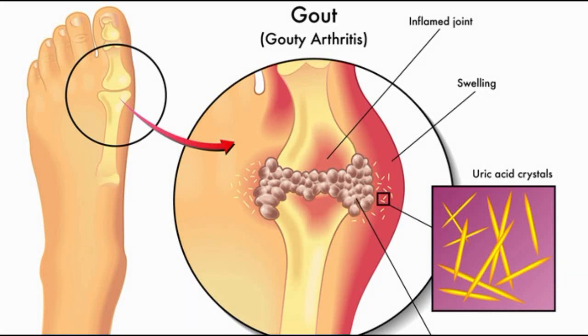Gout is a form of arthritis. You can remove it by making your urine alkaline.